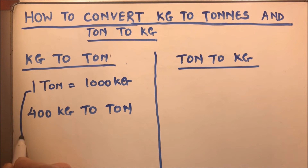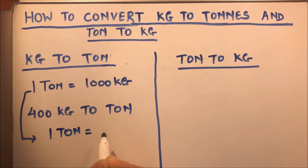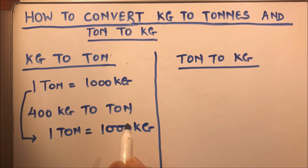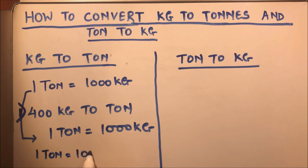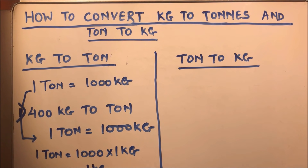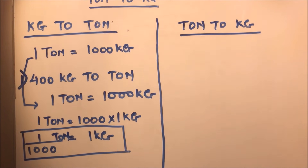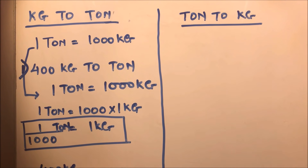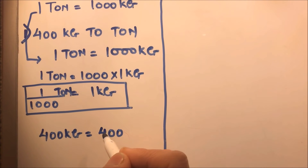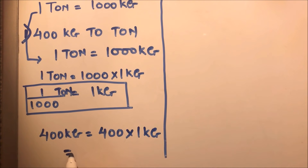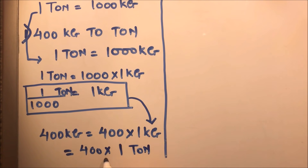From the basic relation we know that one ton is equal to one thousand kilograms. So we can write: one ton is equal to one thousand times one kilogram. Therefore, one kilogram will be equal to one over one thousand tons. This is the relation between ton and kilogram which we are going to use. So four hundred kilograms is equal to four hundred times one kilogram, and in place of one kilogram we will write one ton over one thousand.